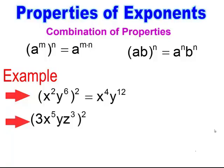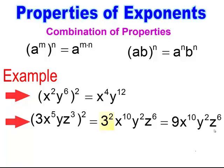When you have the combination properties, be very careful not to miss the numerical part. So this numerical part needs to get that power also. I'm going to end up getting 3 to the 2nd power, x to the 5th — and it's a power to a power — so x to the 10th, y squared, and z to the 6th. Then you need to evaluate the numerical part, so you end up getting 9x to the 10th, y squared, z to the 6th.